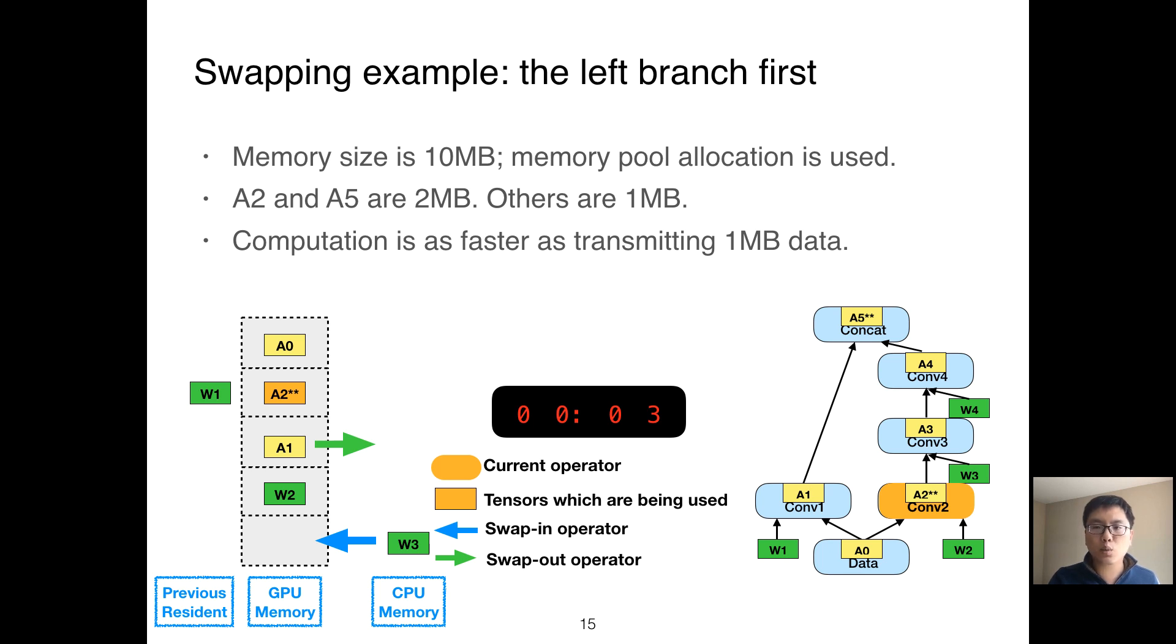We now use the sixth memory object. But as we discussed before, the memory space of a parameter tensor can be directly reused by other tensors as long as its value is not changed. So we deallocate W1 and use its space for A2. At the same time, as we are not going to use A1 for a while, we decide to swap out A1. Since it takes one unit of time to transmit A1 to CPU memory, it still occupies the memory.